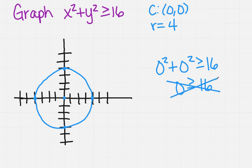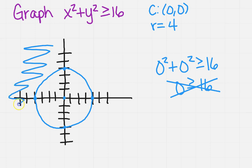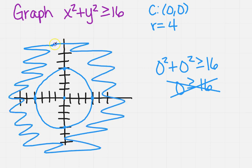So that means I need to shade outside. So you would just casually shade all the way around your circle.